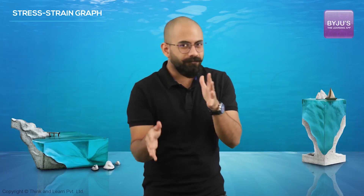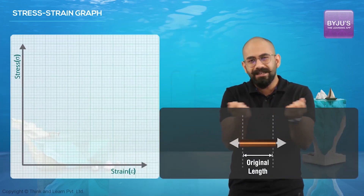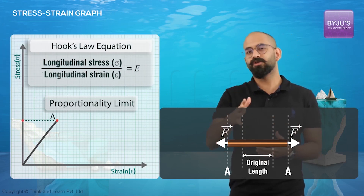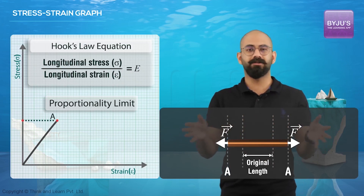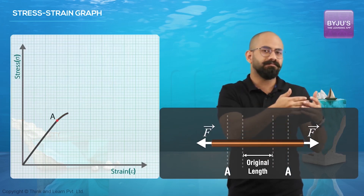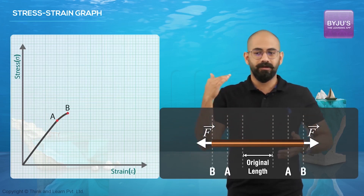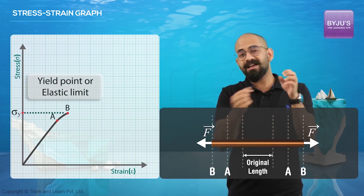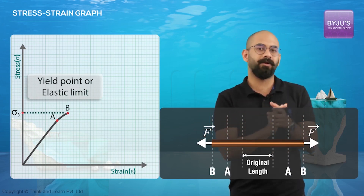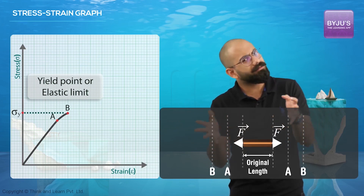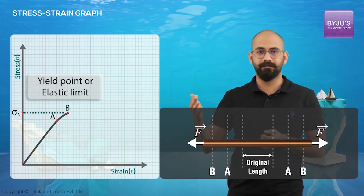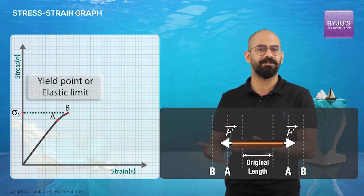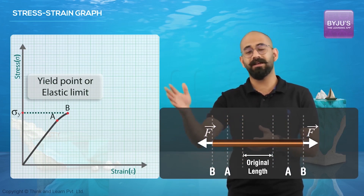Let me explain the graph again. We have a wire for which we increase the stress. Till point A — the proportionality limit — Hooke's law is valid: stress by strain is constant and the slope equals Young's modulus. From A to B, stress by strain is no longer the same constant, so it's not directly proportional. But till point B — the yield point or elastic limit — elasticity is maintained: if I stop anywhere before B and slowly reduce the force, the wire returns to its original length.